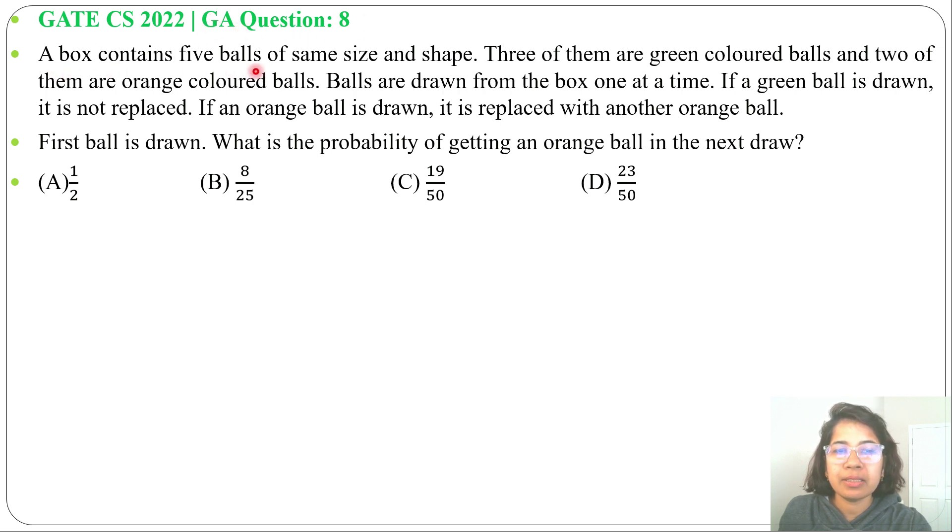A box contains 5 balls of same size and shape. 3 of them are green colored balls and 2 of them are orange colored balls. Balls are drawn from the box one at a time. If a green ball is drawn, it is not replaced. If an orange ball is drawn, it is replaced with another orange ball.